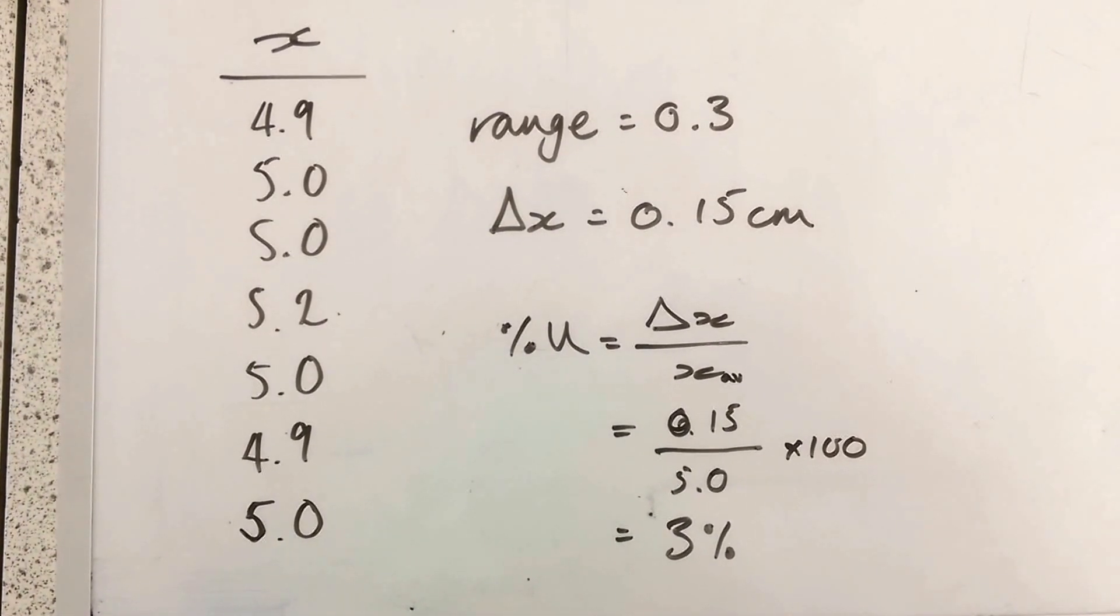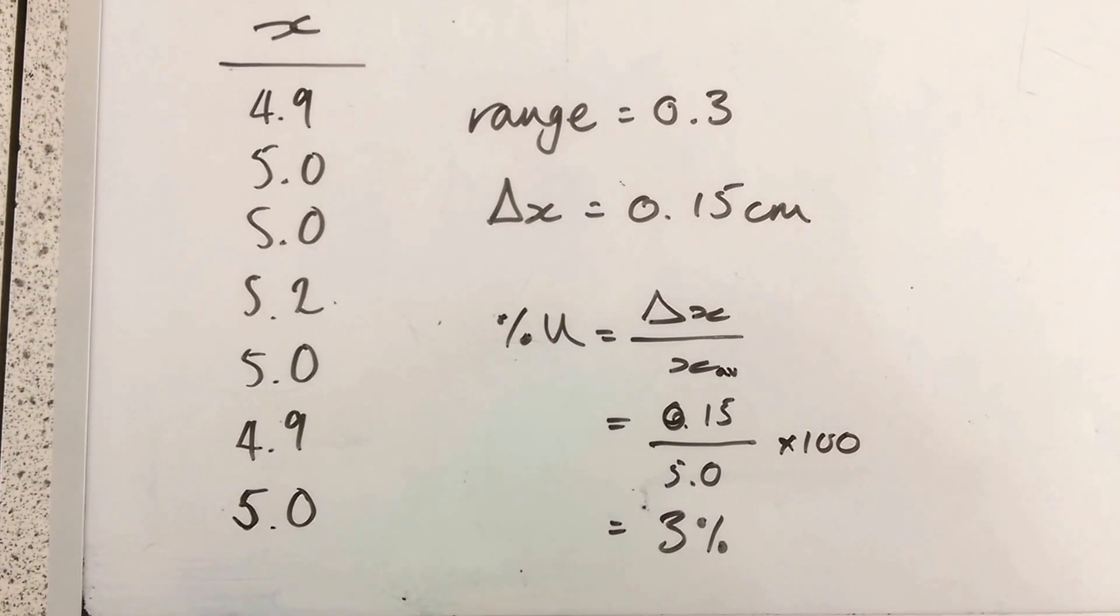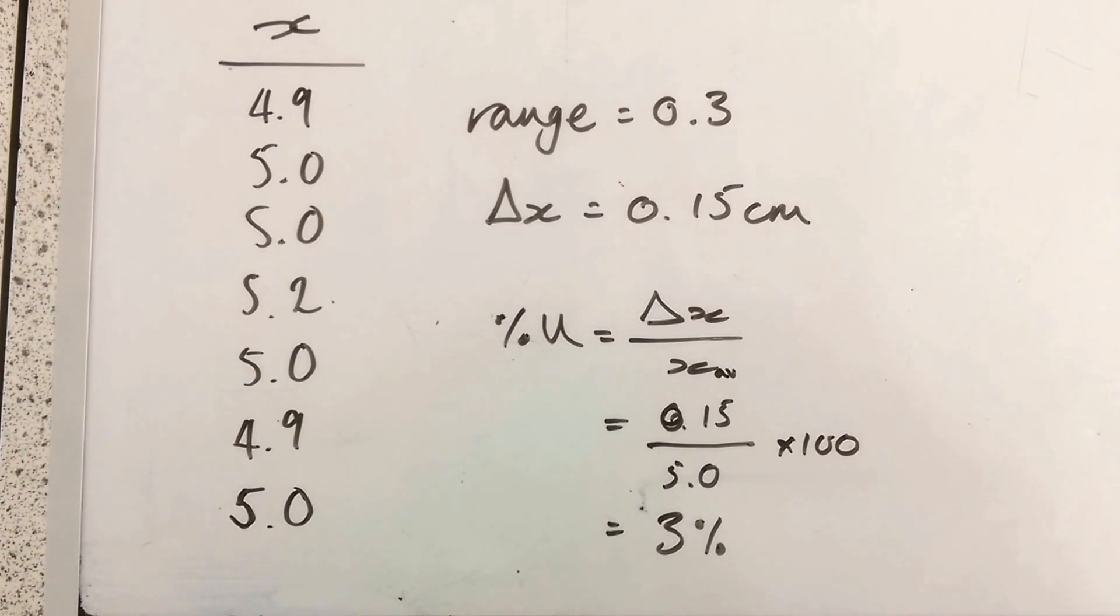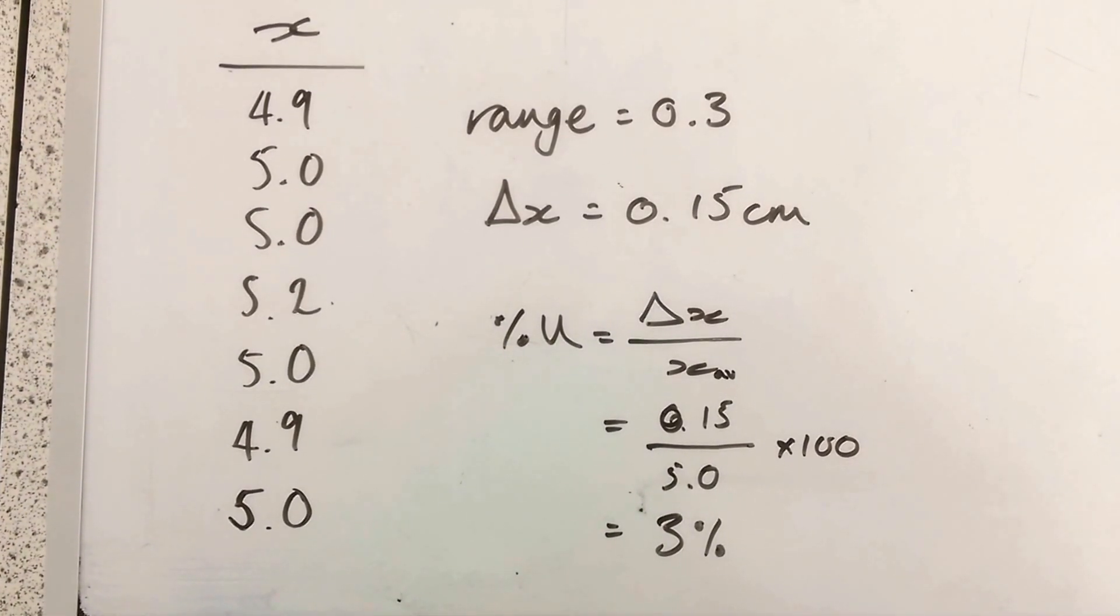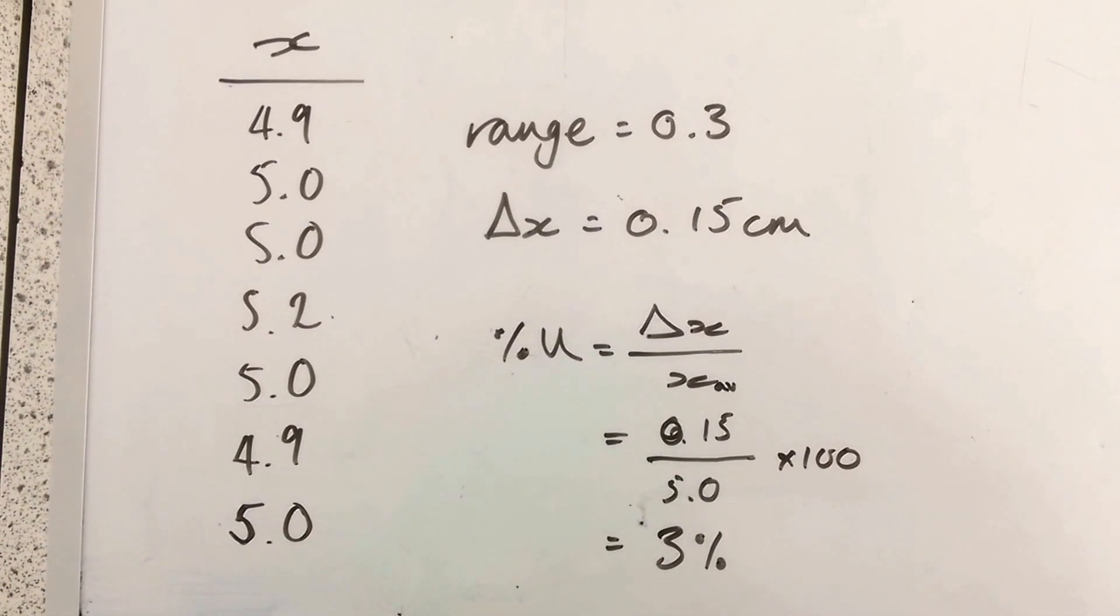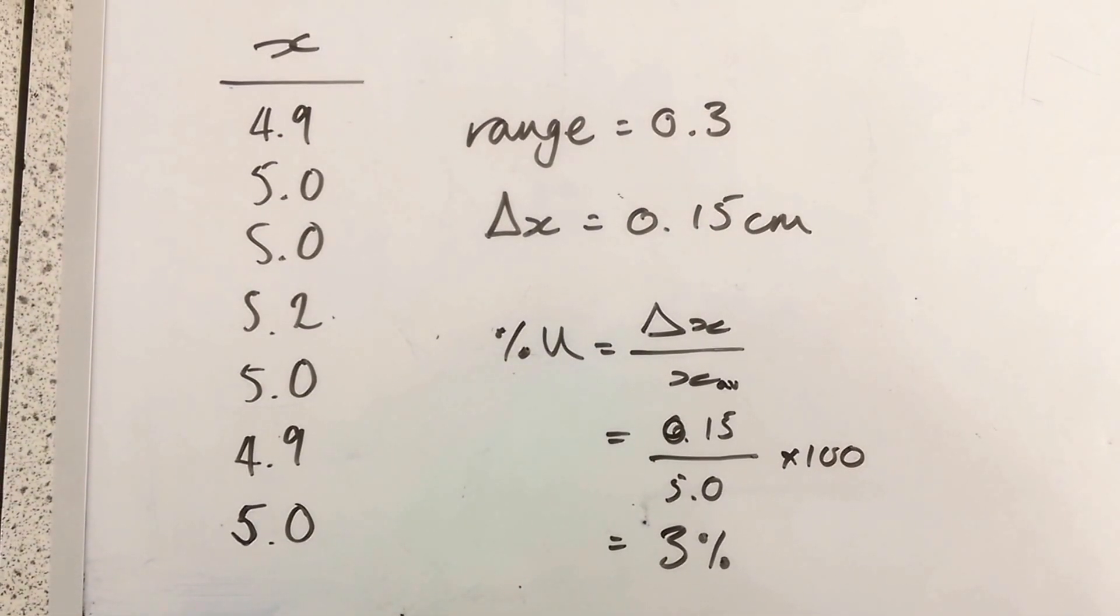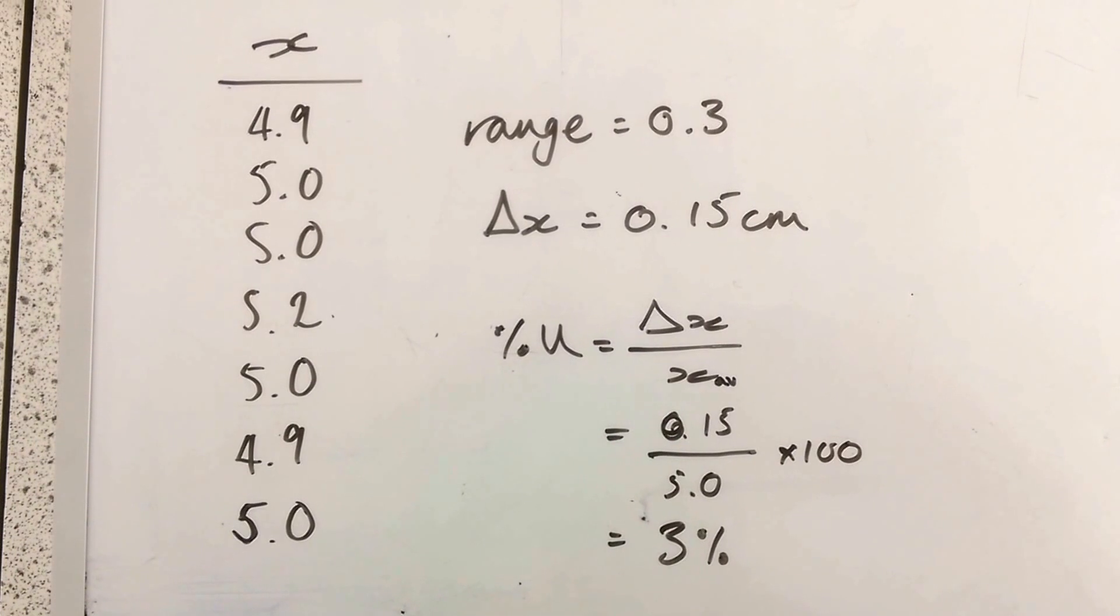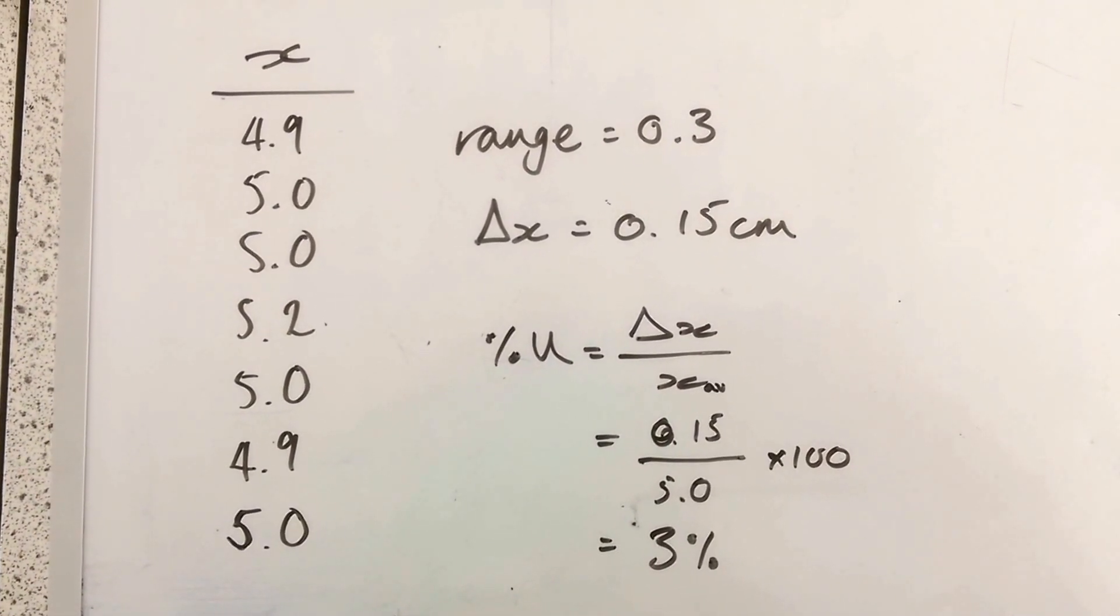0.15 over 5.0 times 100 is a 3% error. So that is a larger error than before. And this should just tell you that you use whichever is the most sensible type of uncertainty for your experiment.